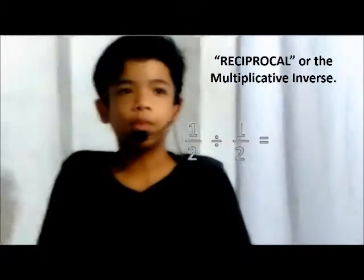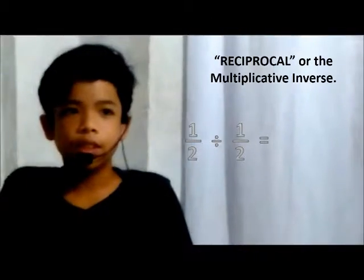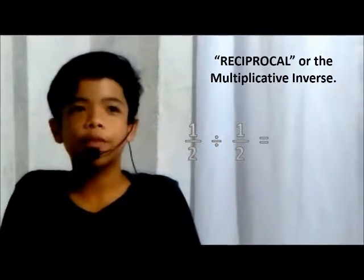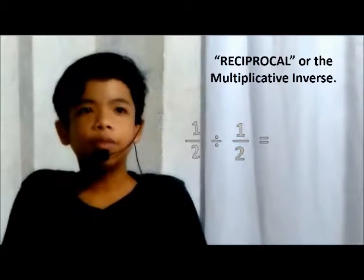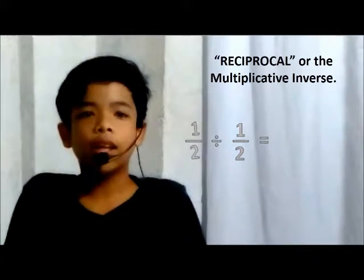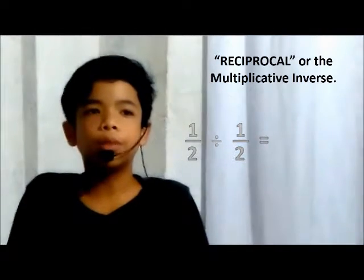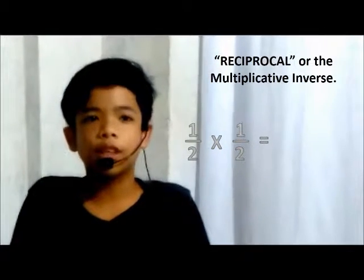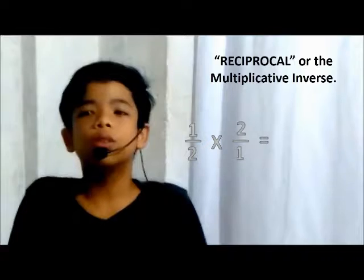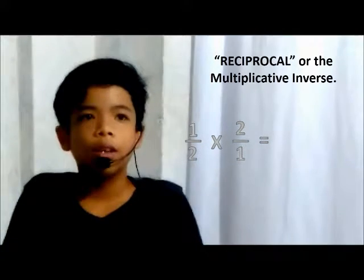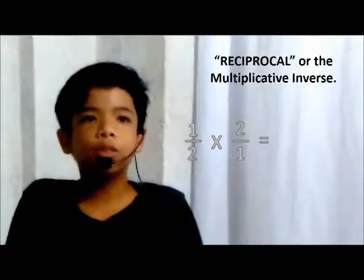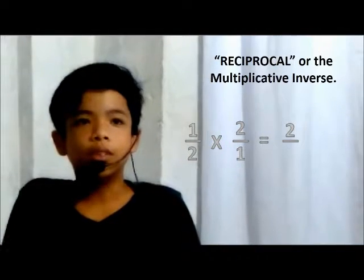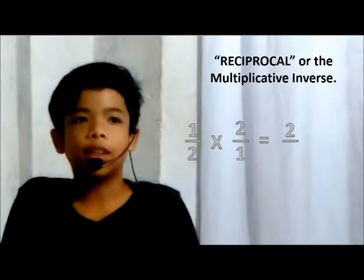Let's have some examples. Suppose we have this equation: 1 half divided by 1 half. We leave the dividend alone — 1 half. Change the operation to multiplication. Then find the reciprocal of the divisor, 1 half, which is 2 over 1. Multiply the numerators: 1 times 2 equals 2, and this will be the numerator of our answer.